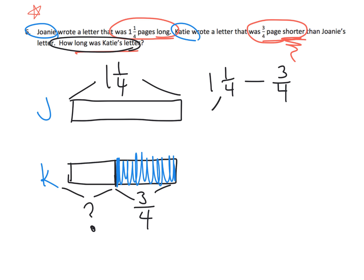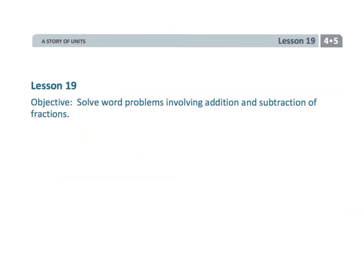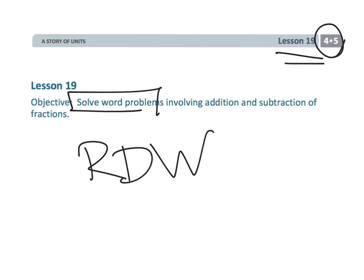To solve: this whole length was one and a quarter. I can think of one and a quarter as four-fourths and one-fourth, which together make five-fourths. Then we take away three-fourths as stated, and we get two-fourths. So this remaining length is two-fourths. That wraps up fourth grade module 5 lesson 19 — solving word problems using the Read, Draw, and Write technique.